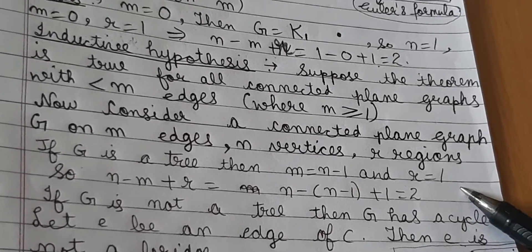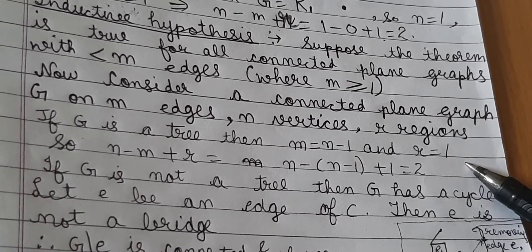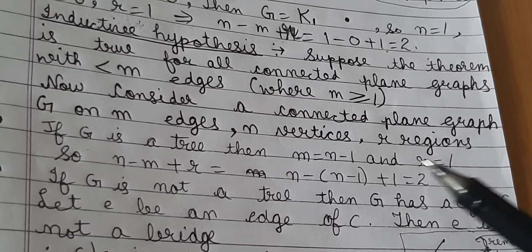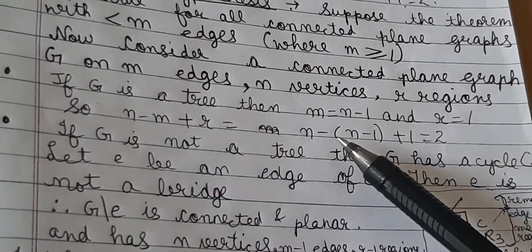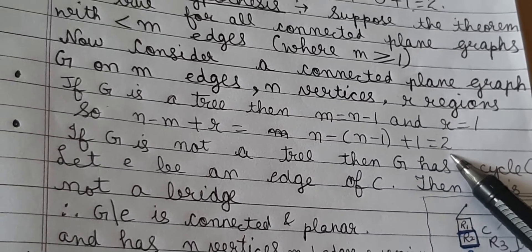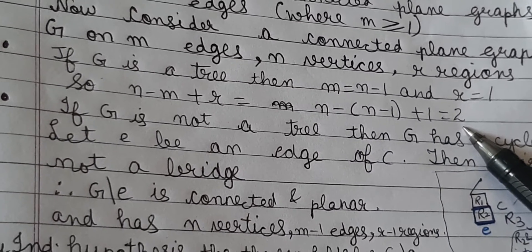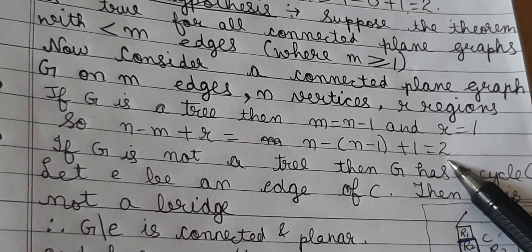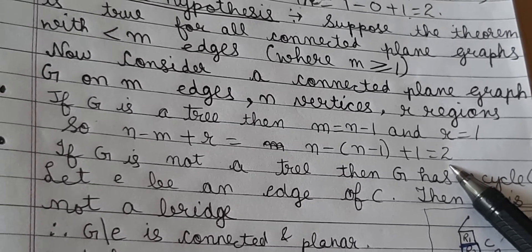Also notice that there will be exactly one region, because when we draw a tree having no cycle means that no region is closed off. So the only region is the exterior unbounded. So in this case n minus m plus r equals n minus (n minus 1) plus 1 equals 2. So if G is a tree then we are done.